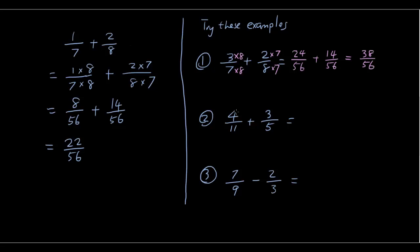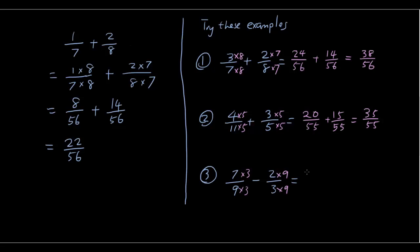For the second question, we're going to multiply both the top and the bottom by 5, leaving us with twenty over fifty-five plus fifteen over fifty-five, which equals thirty-five over fifty-five. And for the last one, we multiply both the top and bottom by 3, and both by 9, so we're left with twenty-one over twenty-seven minus eighteen over twenty-seven, which gives us three over twenty-seven.